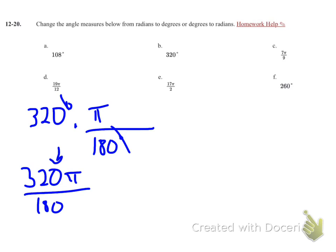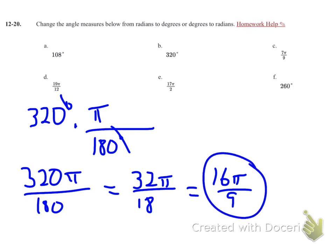I know they both end in 0, so I know I can take a 10 out of both of them. So I'll divide them both by 10 and get 32 pi over 18. From there, I'm going to reduce them both by 2. So I'll get 16 pi over 9. That's as far as you can go. So 320 degrees is 16 pi over 9.